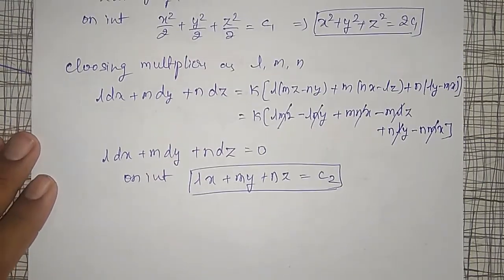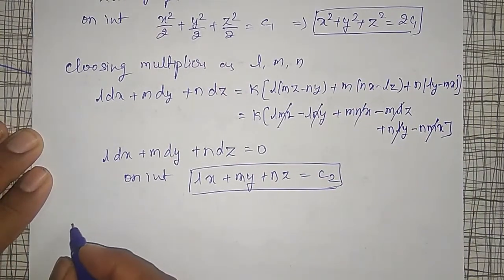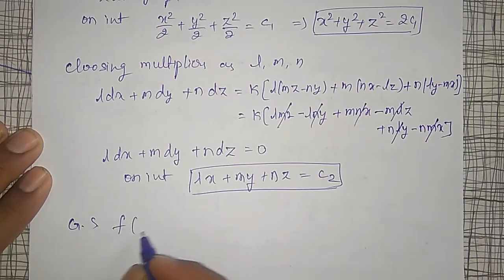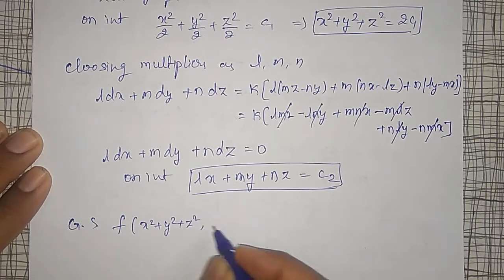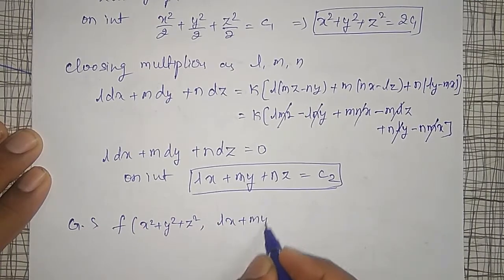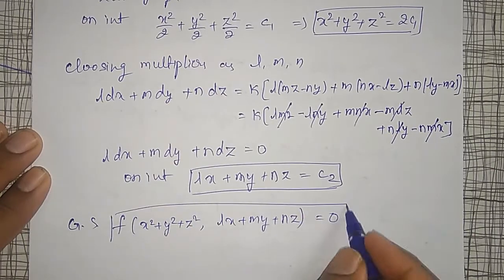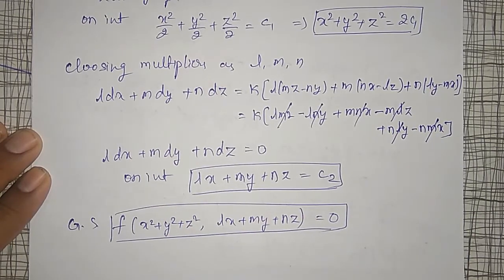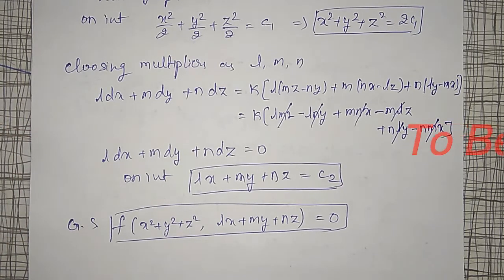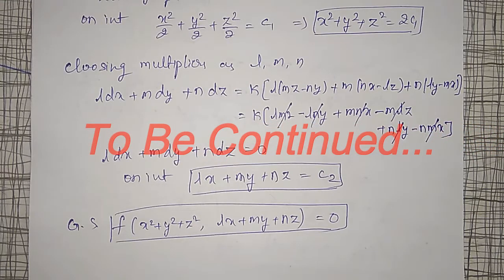Combining the two solutions, the general solution is F(x² + y² + z², lx + my + nz) = 0, which is the required solution for the equation. In the next video I will solve two more examples on this topic. Please subscribe to my channel for more updates. Thank you friends.